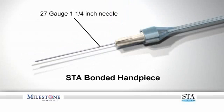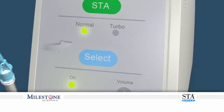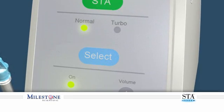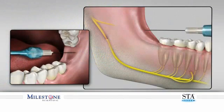It is recommended that you use a 27 gauge, one and a quarter inch needle to perform the inferior alveolar nerve block. Set up the STA in the normal mode and approach the site as you would normally, using traditional anatomical landmarks of the oral cavity.